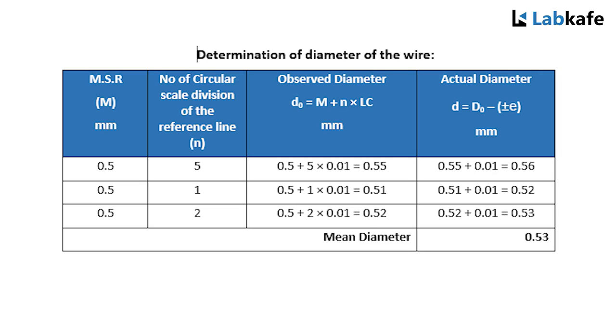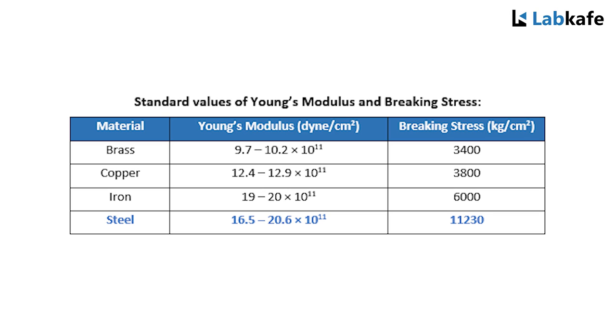After calculating the mean diameter of the wire, we must know what is the maximum load that we can apply on the wire without deformation in the material. This is called limiting load. From the table, the breaking stress of the material is 11,230 kg weight per centimeter square. By definition.